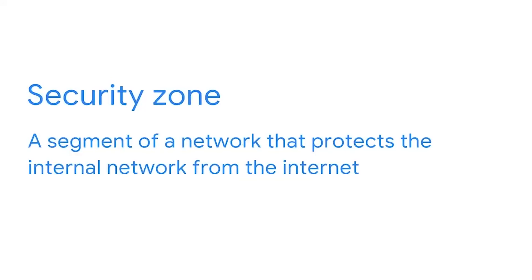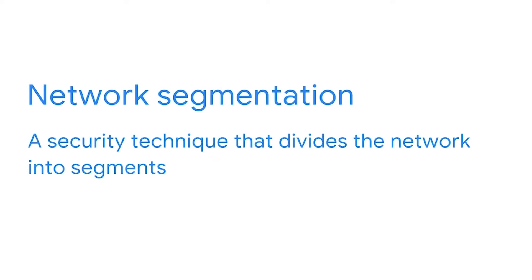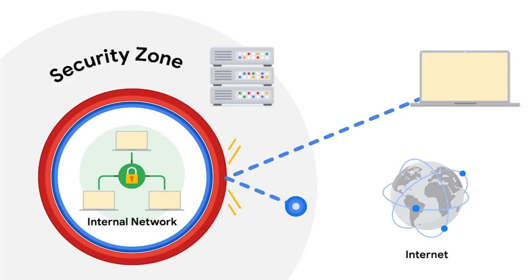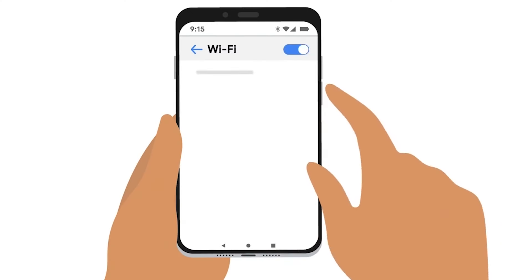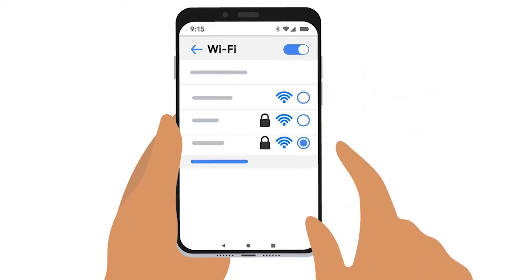We'll discuss a type of network security feature called a security zone. Security zones are a segment of a network that protects the internal network from the Internet. They are part of the security technique called network segmentation, which divides the network into segments. Each network segment has its own access permissions and security rules. Security zones control who can access different segments of a network, act as a barrier to internal networks, maintain privacy within corporate groups, and prevent issues from spreading to the whole network. One example of network segmentation is a hotel that offers free public Wi-Fi — the unsecured guest network is kept separate from another encrypted network used by the hotel staff.